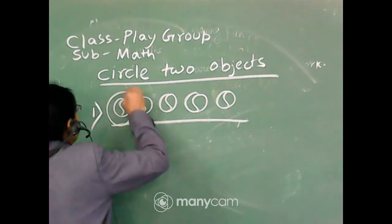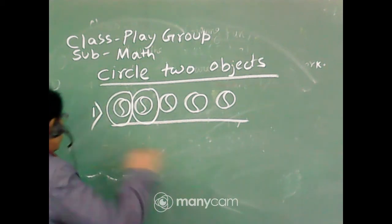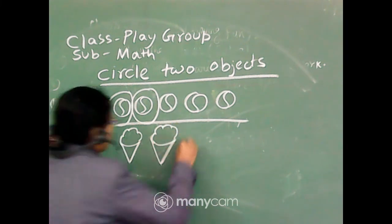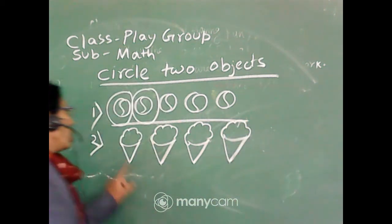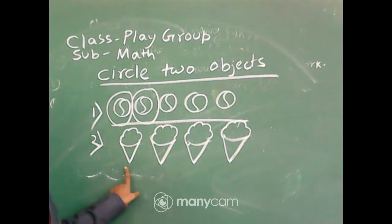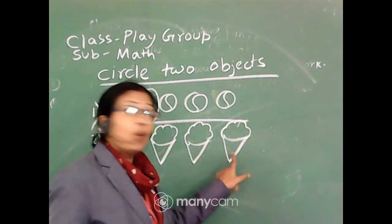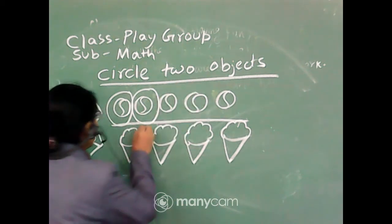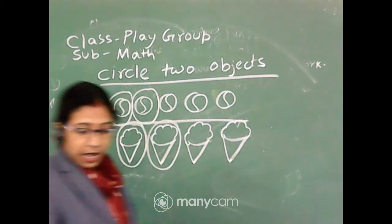Next, number two. There are some ice creams. Now how many ice creams are there? One, two, three, four. Four ice creams are there. But we have to circle only two objects, so we circle one, two. Clear? Now next one.